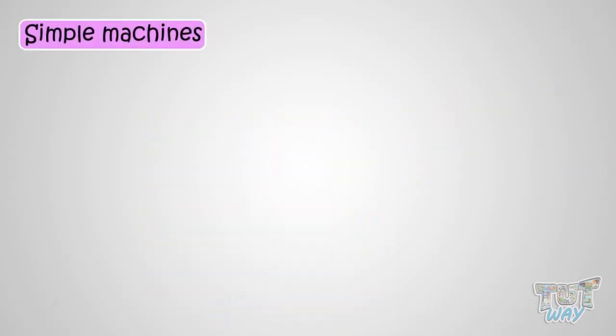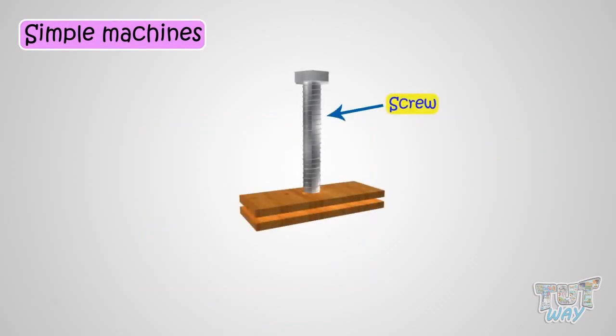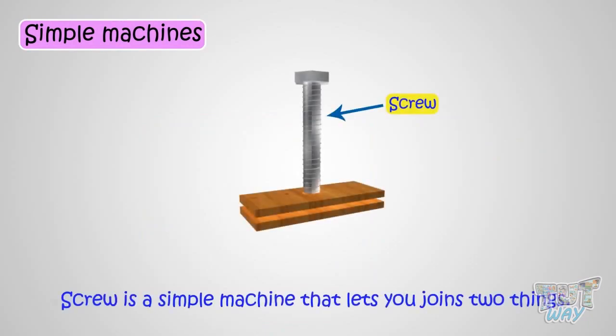Now let's take an example of simple machines. Screw. It is a simple machine that lets you join two things.